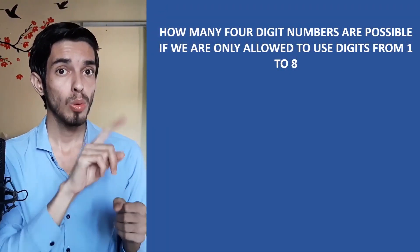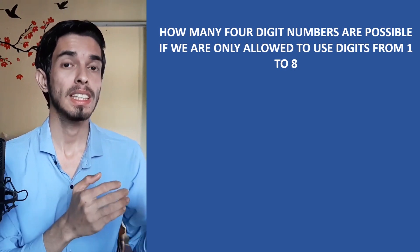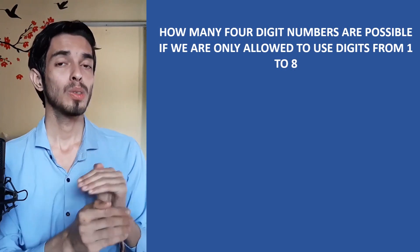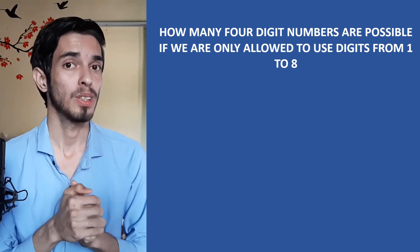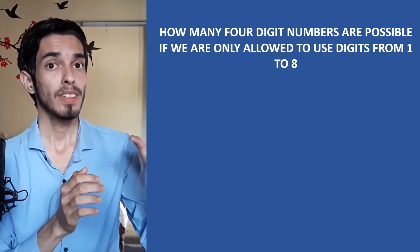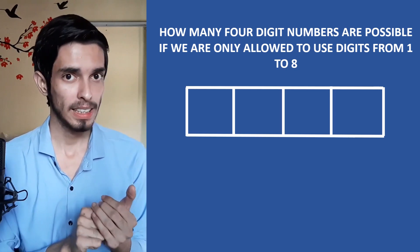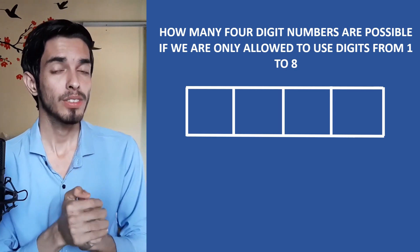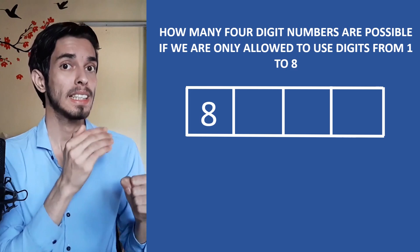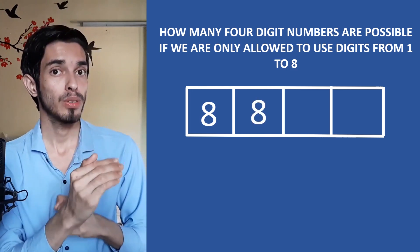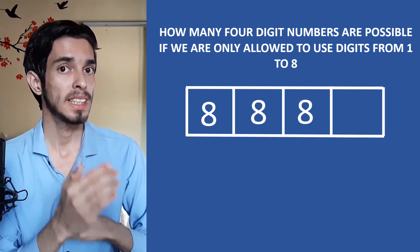The question is: how many four-digit numbers are possible if we are only allowed to use digits from one to eight? Try to do it yourself using common sense and the rules of sum and product. We have four different slots and we need to choose four digits. The number of ways to choose the first digit is eight, the second digit is eight, the third digit is eight, and the fourth digit is also eight.